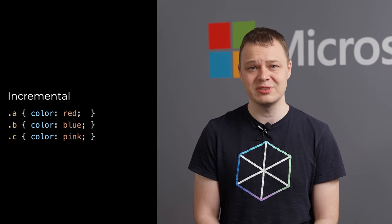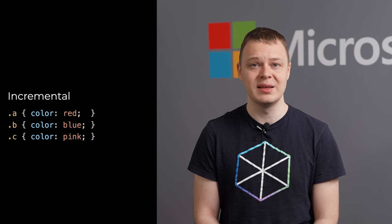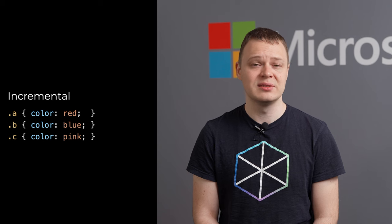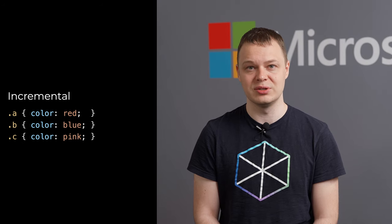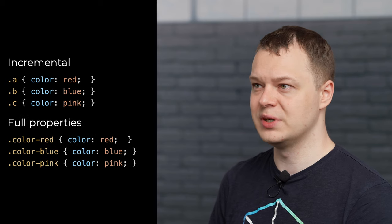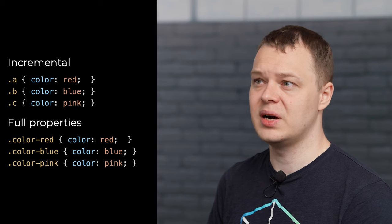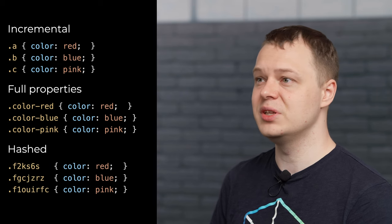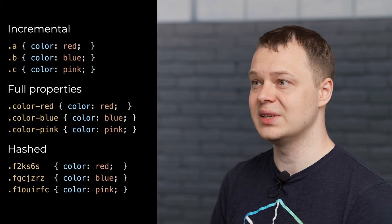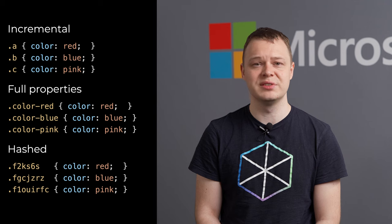I'd also like to mention how we decided to generate CSS classes. Fela.js, for example, uses an incremental approach, where the first class name is A, the second is B, and so on. This approach reduces the bundle size for CSS since rules contain fewer characters. Another option was to use full property and value names — nice for debugging, but painful for bundle size. We found a middle ground by using hashed classes based on the CSS property and value of a rule itself. The hashing algorithm is deterministic and doesn't depend on the environment. This means that hashes will be the same regardless of where they were generated — during application build, on a client, or by server-side rendering.